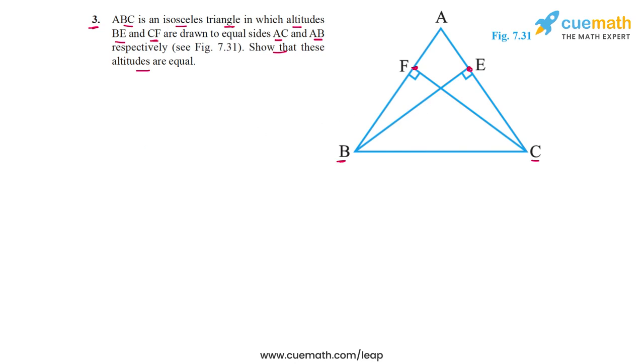So what I'm going to do to solve this problem is to compare the triangles FBC and ECB. I'm going to highlight these two triangles for you as always because that helps in the visualization process. So FBC is this triangle, and let me highlight ECB now. So ECB is this triangle.